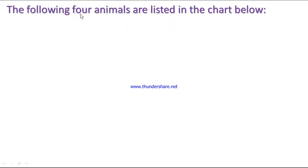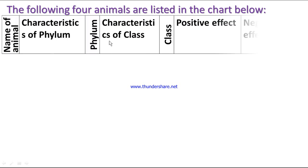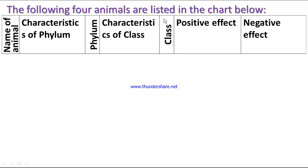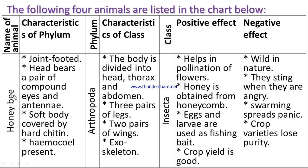The first animal is the honeybee. Characteristics of the phylum: joint-footed, head bears a pair of compound eyes and antennae, soft body covered by hard chitin, haemocoel present. The phylum is Arthropoda.